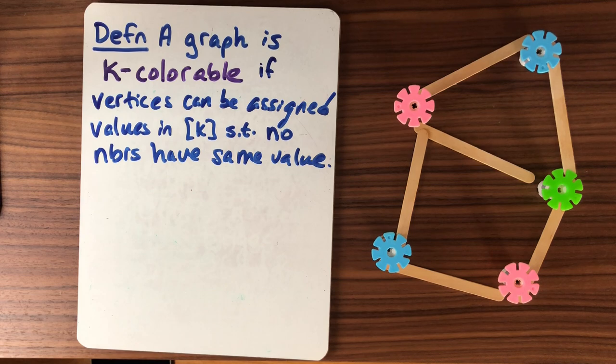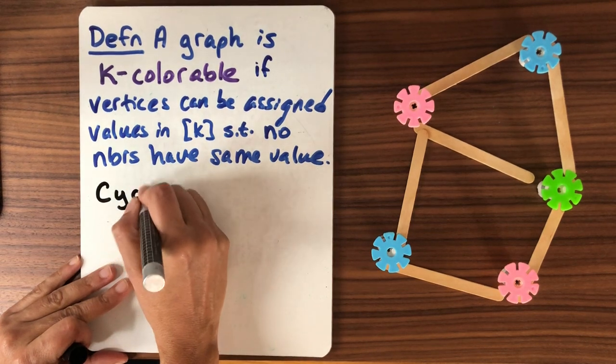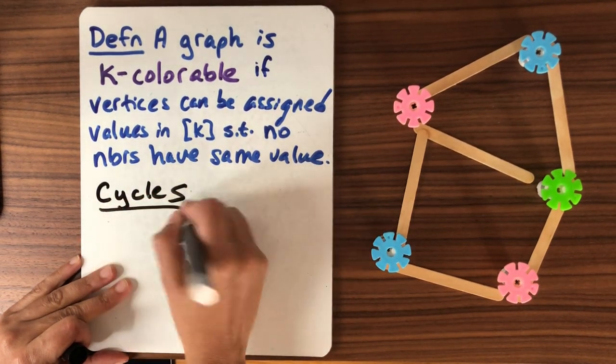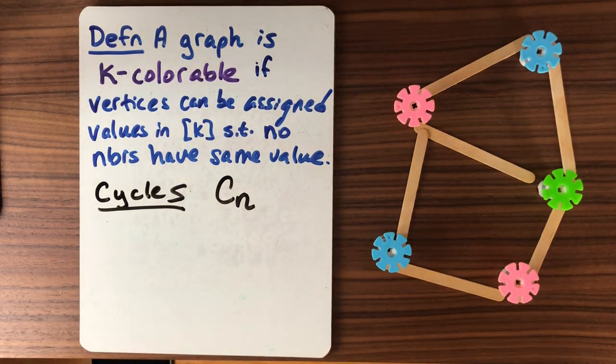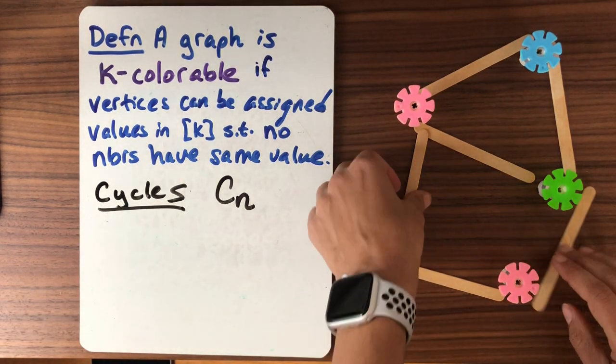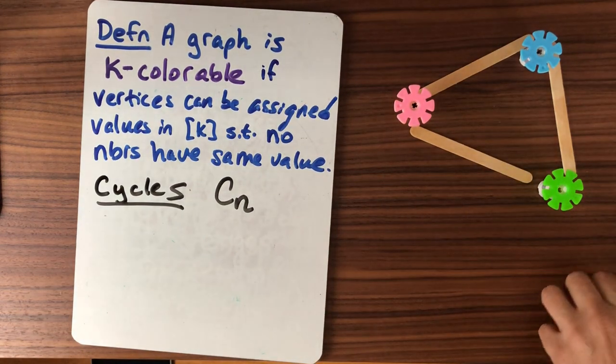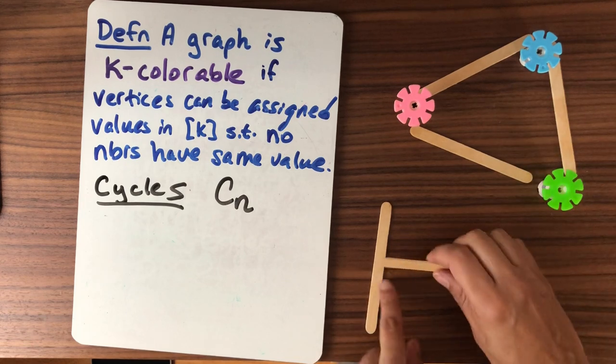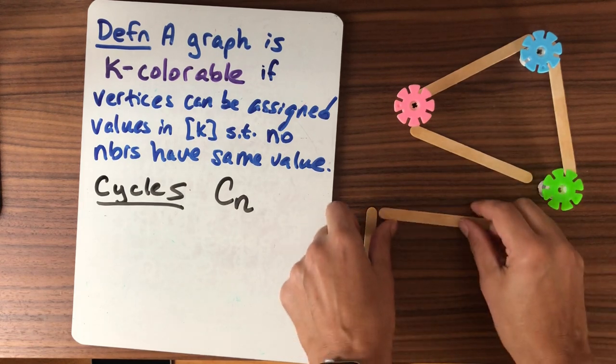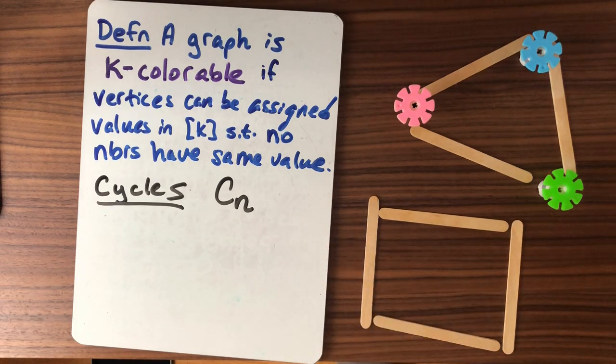So let's think about some examples of graphs that we could use. Let's think about the examples of cycles. So Cn is generally what we'll call the cycle on n vertices. So we can see here we have an example of C3. So C3 is the cycle with three vertices. Let's think about C4. So C4, let's put in the edges and think about how could we color that.